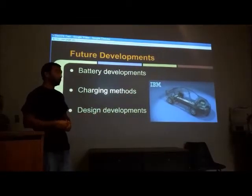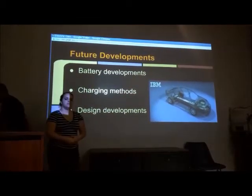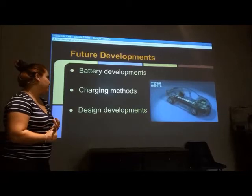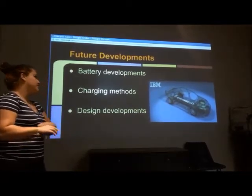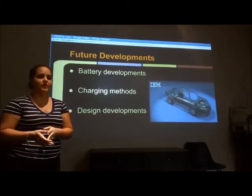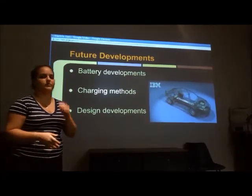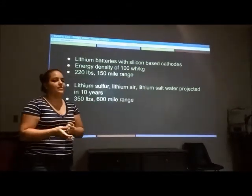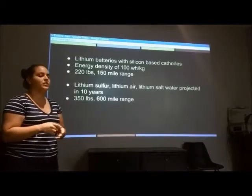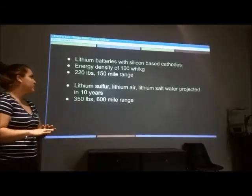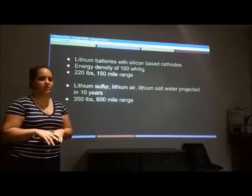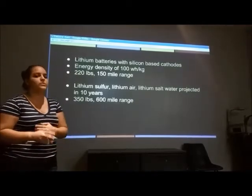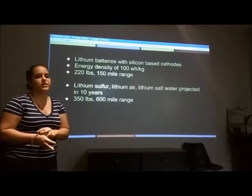Now Emily is going to finish off with future developments. The future developments for the electric vehicle are to better the battery, to change the charging methods, and to design new developments for the motor. For the batteries, in around five years or so, lithium batteries with silicone-based cathodes are expected to increase the energy density to 100 watt-hours per kilogram. These batteries are going to weigh 220 pounds and have a range of 150 miles.